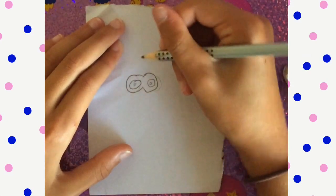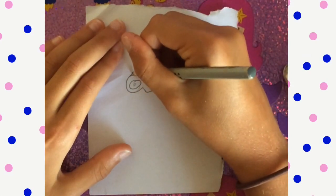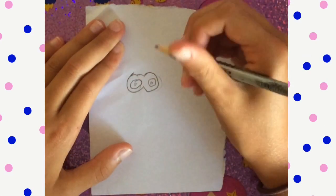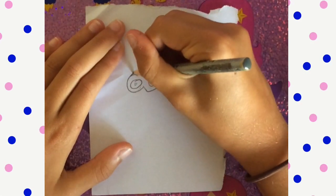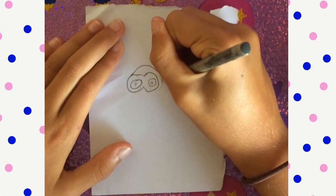At the top of the first circle you want to make a line going up and then you curve it around to the second circle going like that.